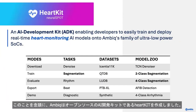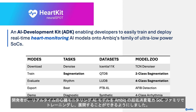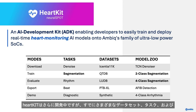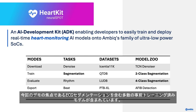With this in mind, AMBIC has created HeartKit, an open-source AI development kit that enables developers to train and deploy real-time heart monitoring AI models onto AMBIC's family of ultra-low-power SOCs. HeartKit is still in active development, but already includes a variety of datasets, tasks, and a number of pre-trained models, including ECG segmentation, which is the focus of this demo.